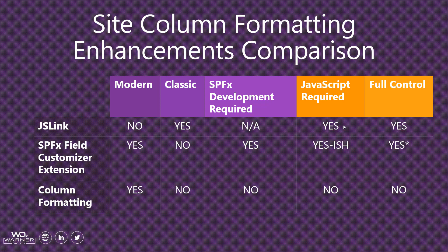How does column formatting compare to other column experience options? The three most popular are JS Link, SharePoint framework field customizer, and column formatting. JS Link is not available in the modern experience — it's classic only. No SharePoint framework development is required, but JavaScript is required and it provides full control over the experience, including the editing experience. For example, you can create a wizard that allows users to choose icons via pointing and clicking, with the client never knowing the difference. You have true full control from view to edit to display.